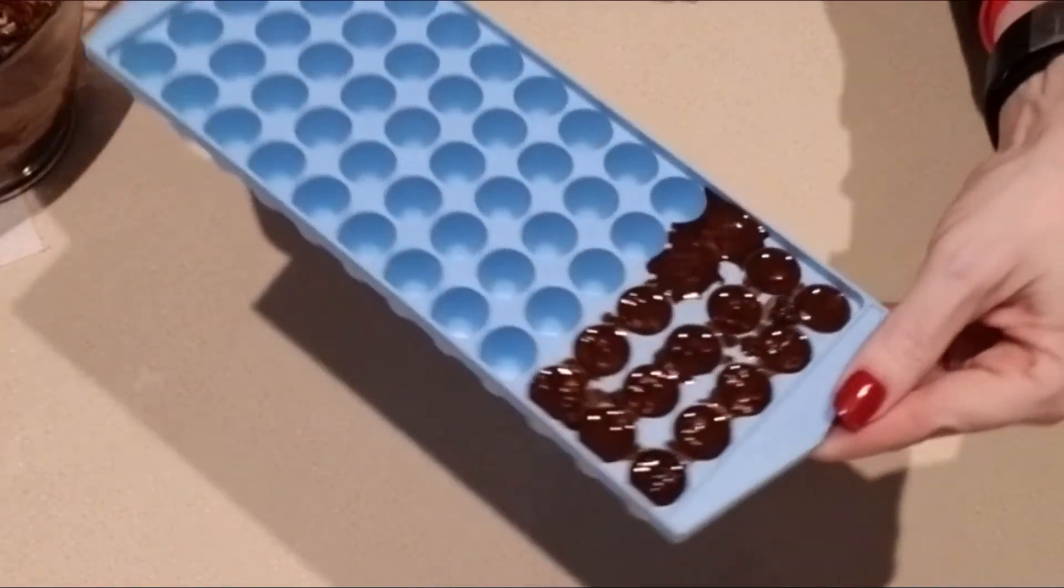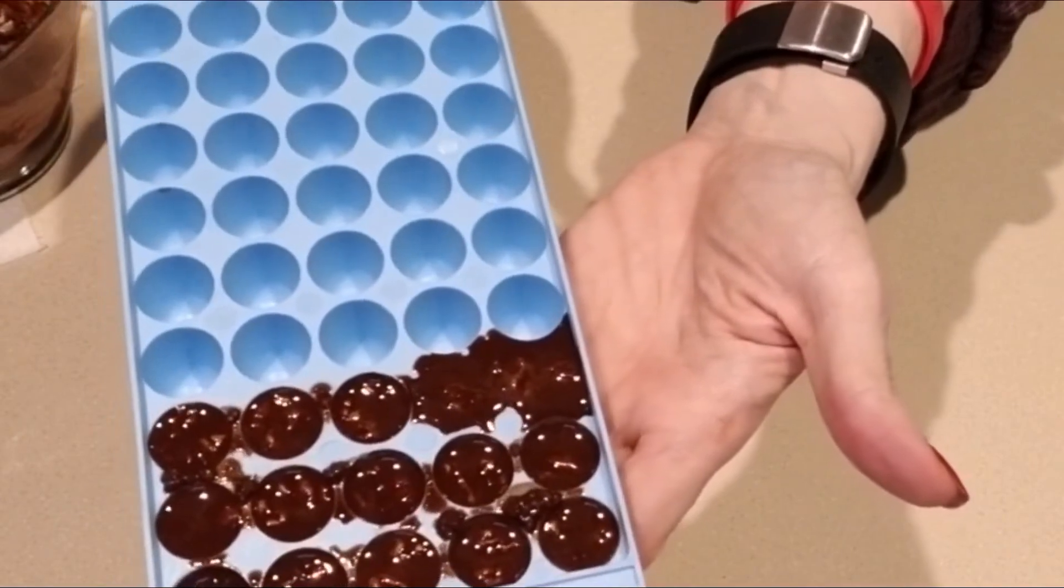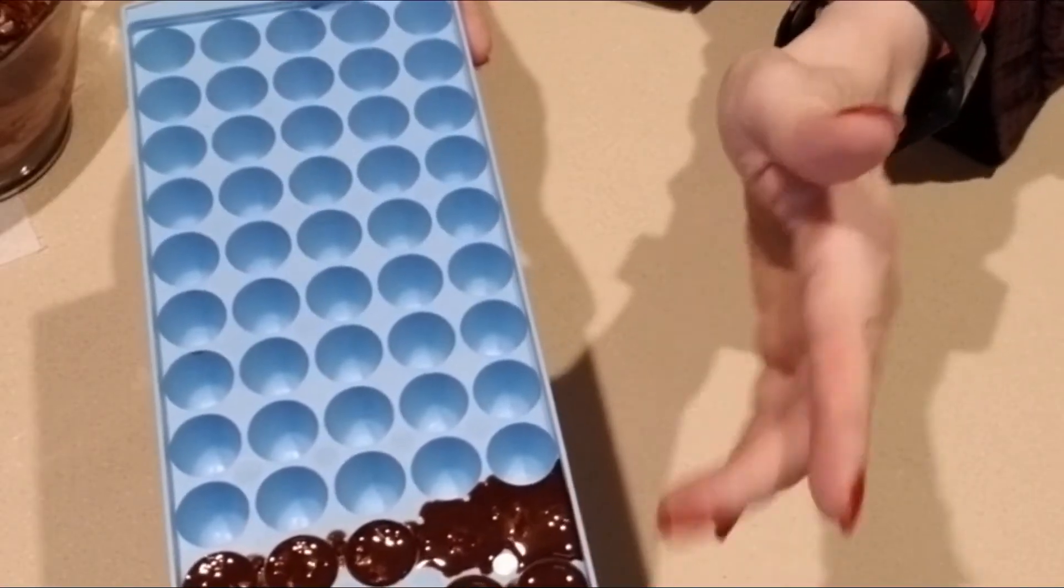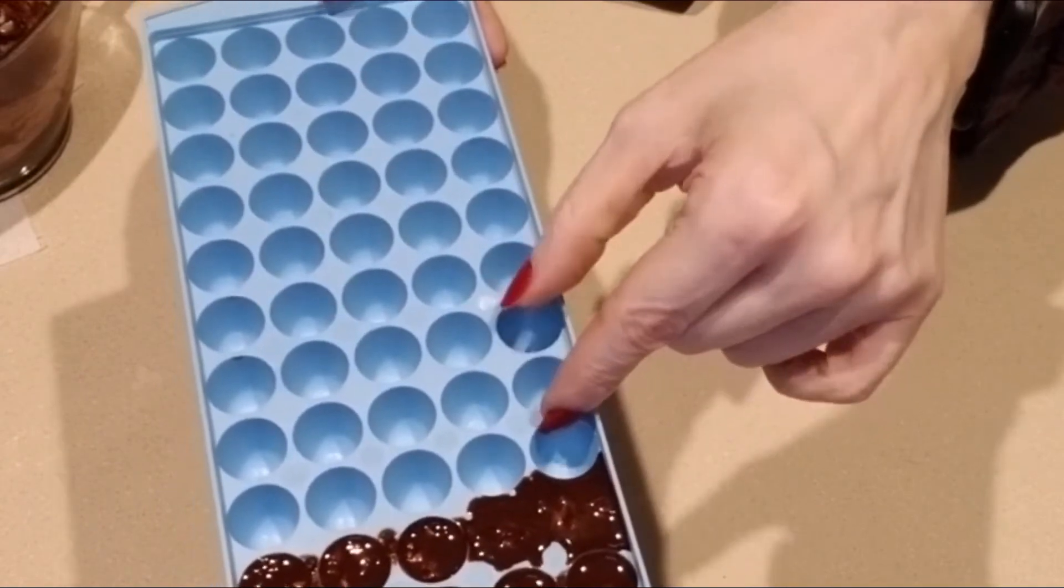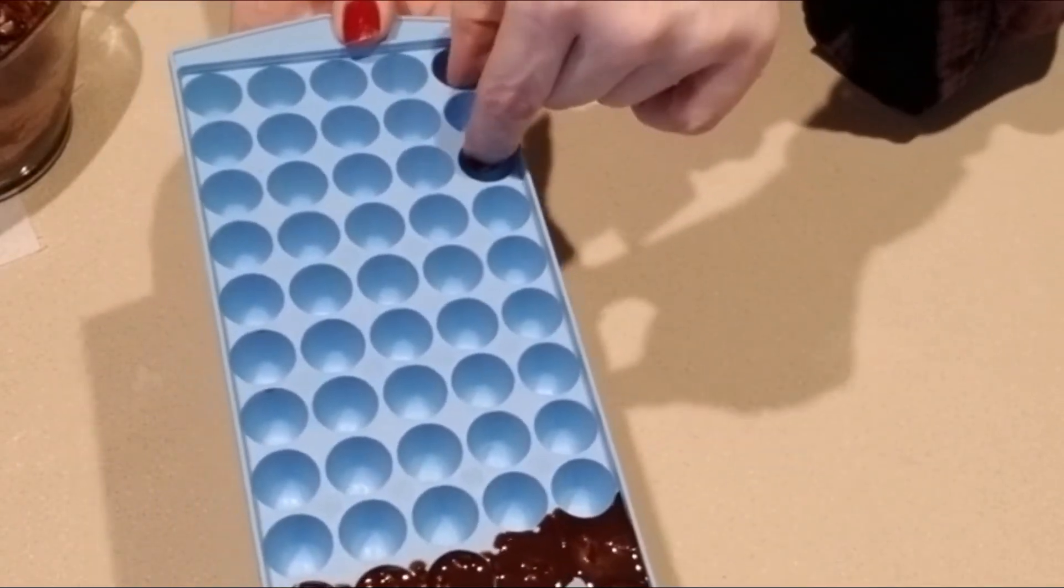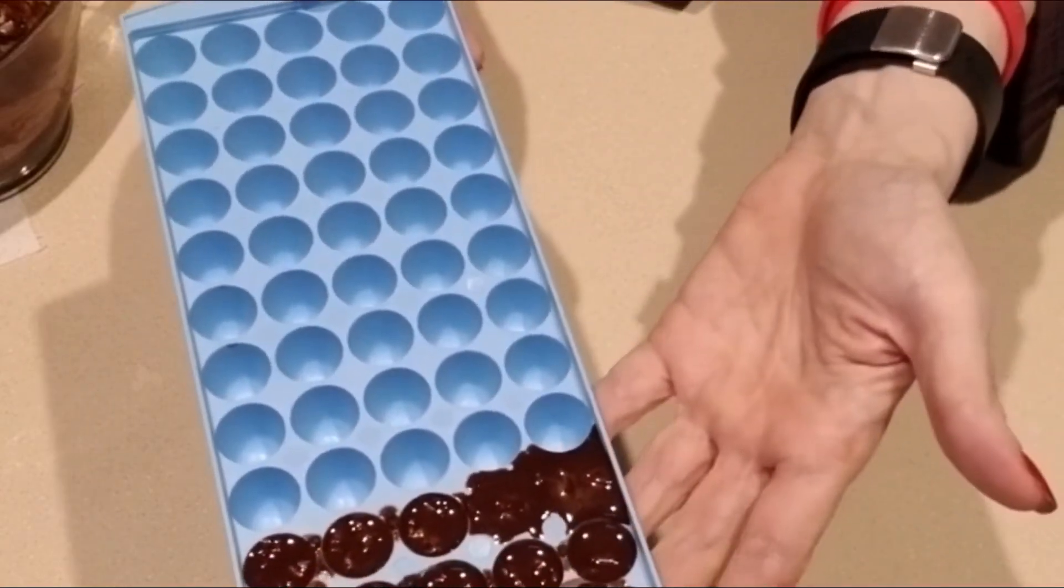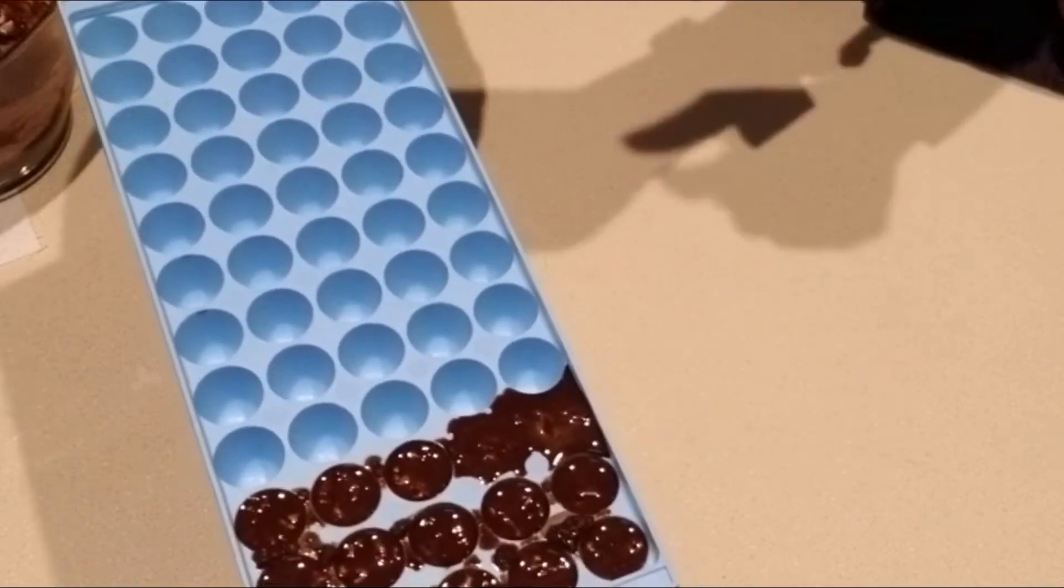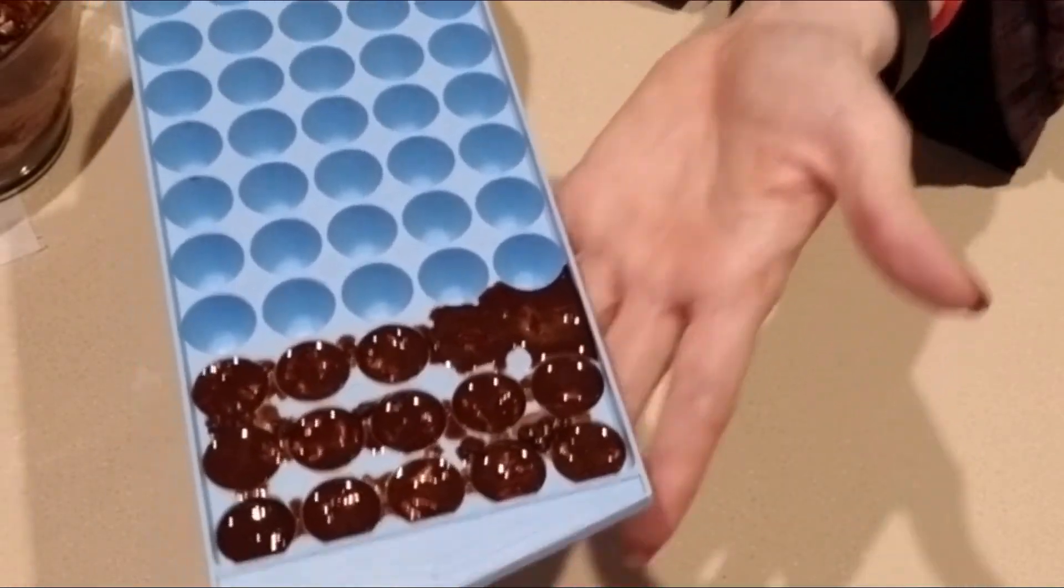Alright, guys, so now that we have everything in our trays - and you can see I just used two tablespoons - I would say if I had done, what, two tablespoons, four, six, eight tablespoons, what is that, a quarter cup? Then I would have had plenty for this entire tray. Alright, so this goes off to the freezer. I'll be back to show you what it looks like when we're finished.